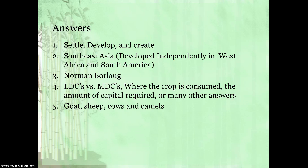Another difference is the amount of capital required. In subsistence you don't need as much capital. In commercial you need a lot more capital. Some other valid answers would have been the amount of land, the amount of profit, or the scale of the operation — there's a variety of answers for this. And then the last question — what animals are commonly domesticated within pastoral nomadism? The acceptable answers would have been goat, sheep, cows, and camels.